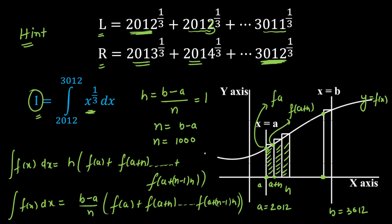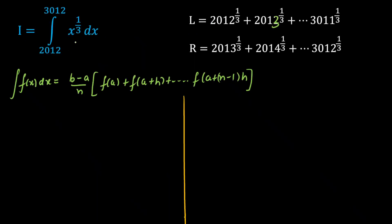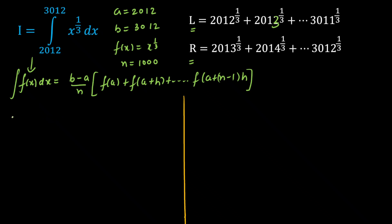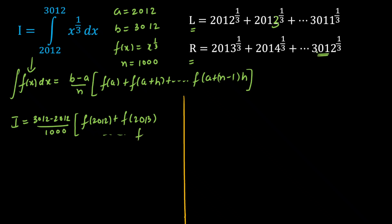Now I am going to write I as a summation of cube roots using integration by first principle, using the expression derived. We are calculating area from a = 2012 to b = 3012. Our function is x to the power 1/3, so cube roots are visible. The number of strips is 1000. Putting in the values: (3012 − 2012)/1000 multiplied by f(2012) + f(2013) + ... and the last value is f(3011), since we go up to a + (n−1)·h.